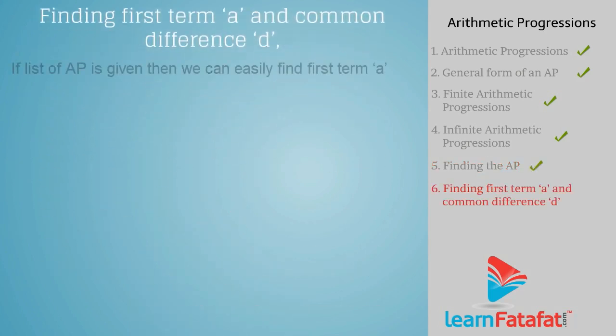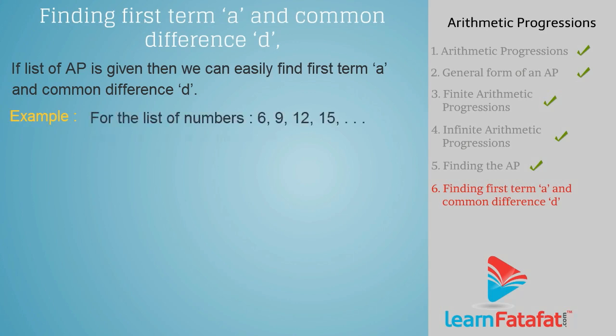Finding first term A and common difference D. If a list of an AP is given, then we can easily find first term A and common difference D. Example: for the list of numbers, check for AP and find A and D.